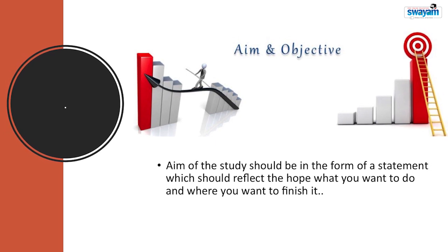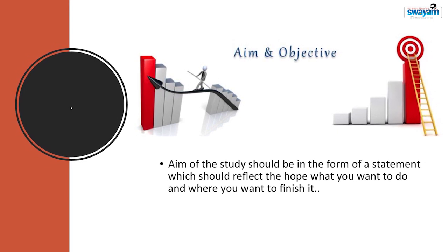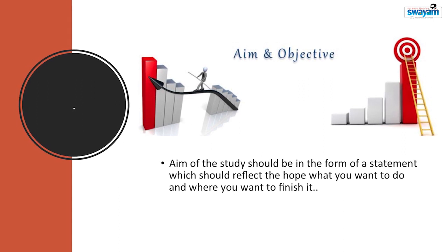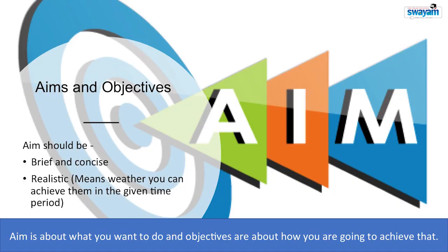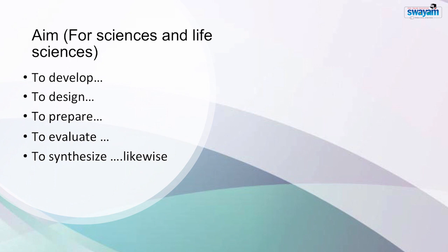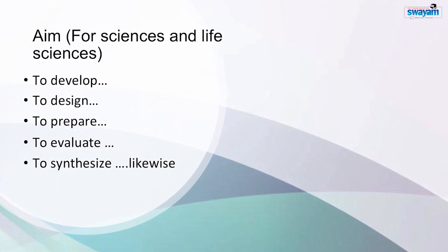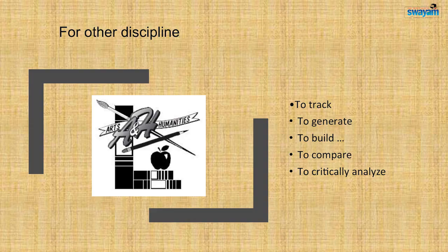Now we move to aims and objectives. The aim of the study should be in the form of a statement which reflects the hope of what you want to do and where you want to finish. Aim is about what you want to do; objective is about how you are going to do that. Aim should be brief, concise, and realistic — whether you can achieve them in the given time period. For sciences you can start with: to develop, to design, to prepare, to evaluate, to synthesize, and so on. For other disciplines: to track, to generate, to build, to compare, to critically analyze.